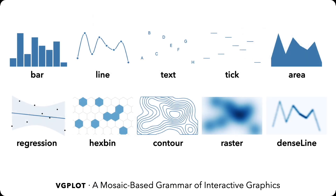To assess Mosaic, we developed VGplot, a grammar of interactive graphics. In VGplot, each mark is a Mosaic client that generates queries. We use Observable Plot to render query results to scalable vector graphics.